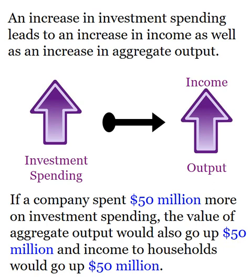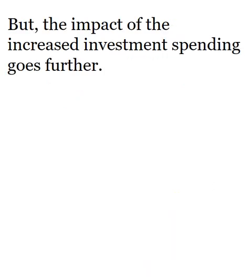But it goes further. Because that output — those goods and services being created have value. When they get sold, people are going to get paid. You have to pay them for their labor, and stockholders will get paid for the increase in profits. So no matter what, the value of those outputs becomes someone's income. That $50 million of investment spending multiplies into both $50 million in value of output that we'd see in our GDP, and also $50 million in household income.